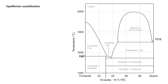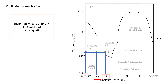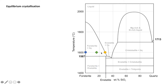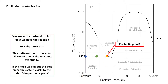Now we'll go through an example of equilibrium crystallization. Picture a system that we cool down — it hits the liquidus and we crystallize some forsterite from the liquid. If we pause to apply the lever principle from previous lessons, we get approximately 51% liquid represented by the longer arm, and 41% solid represented by the shorter arm. If we continue to evolve that system, we hit the peritectic point and undergo the reaction: forsterite plus liquid equals enstatite.